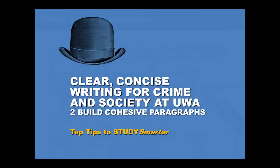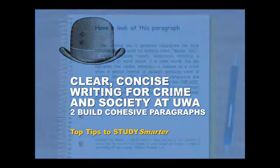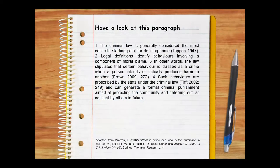Good writers ensure their paragraphs are cohesive, which means their paragraphs feel tight, their ideas seem to belong together, and their writing just flows. Let's explore how they do this by taking a look at a cohesive paragraph based on one in which Ian Warren discusses how lawyers define crime. Pause the video while you read this paragraph, then we'll look at what makes it cohesive.